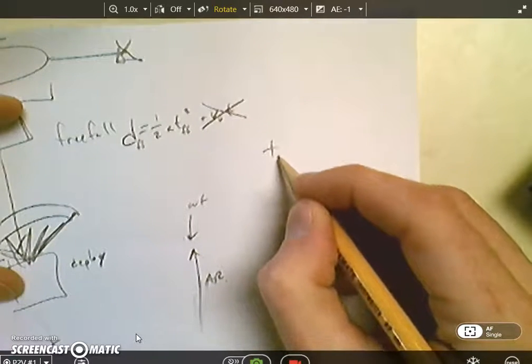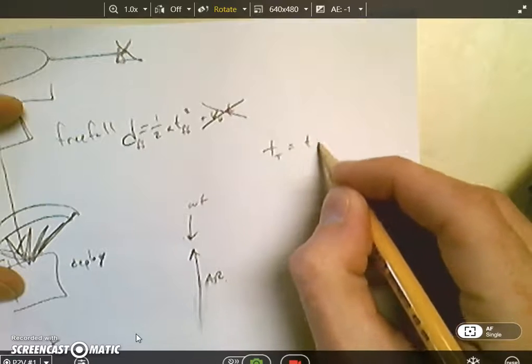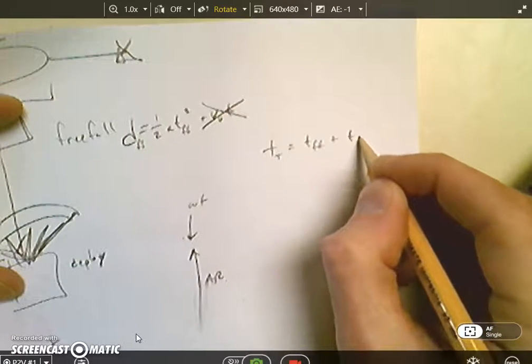And if it asks you what's the total time, total time is equal to the free fall time plus deployment time.